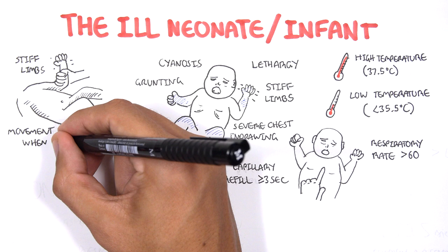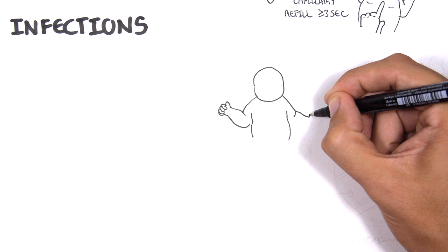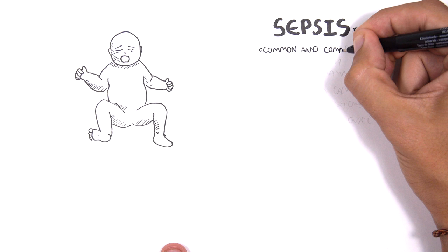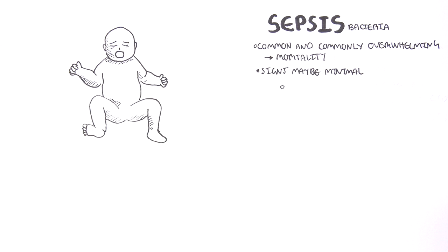The first neonatal infection we will look at is sepsis caused by bacteria. Sepsis is essentially the body's response to a systemic infection. It is common and commonly overwhelming with high mortality. The signs may be minimal but usually are those we discussed at the start.